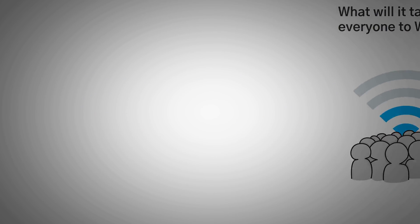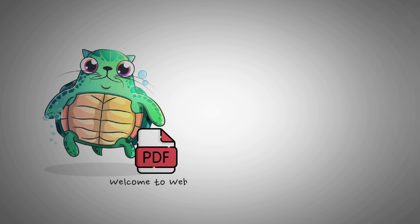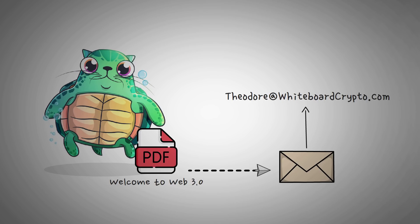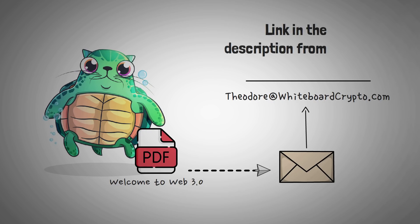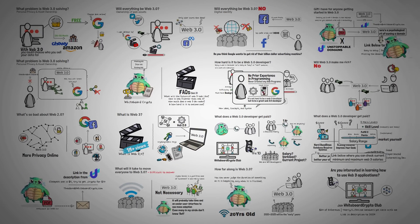I want to remind you that I'm offering a Welcome to Web3.0 PDF to anyone who emails me their Web3 crypto domain at theodore@whiteboardcrypto.com — I'll try to send the PDF back within 12 hours. If you don't have one, there's an affiliate link in the description from Unstoppable Domains. The cheapest option is around $5, but I personally like the .crypto ones that are around $10. Thanks for watching — I hope you've learned something and I hope to see you in the next video.